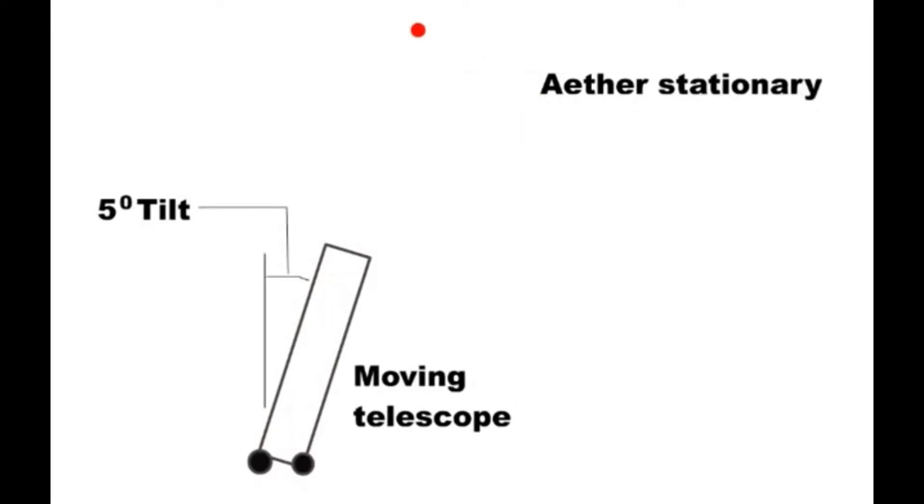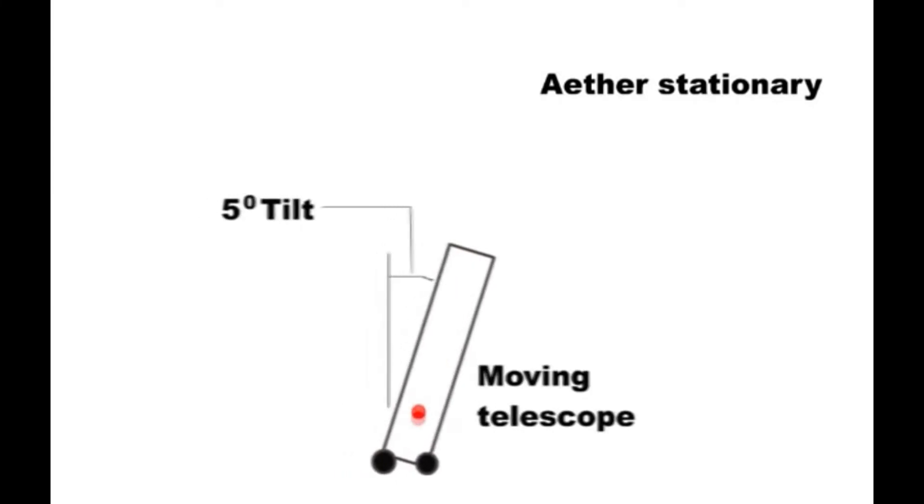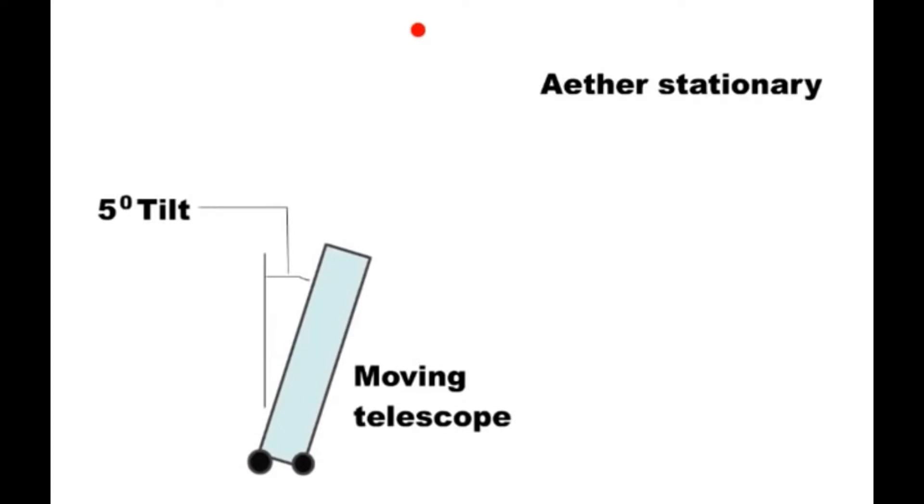However, there is a simple experiment that can determine whether it was the Earth that was moving or the ether and starlight. All that you had to do was record the tipping required for any particular star, then fill the telescope with water, which greatly slows down the speed of light in the telescope.